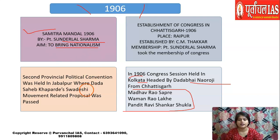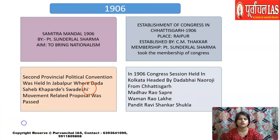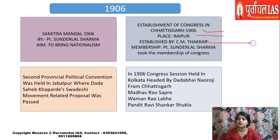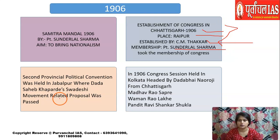Importantly, 1906 was the year Congress was established at the state level in Chhattisgarh — though at the national level it was established in 1885. The Chhattisgarh Congress was established in 1906 at Raipur, now the capital of Chhattisgarh, by C.M. Thakkar, and membership was taken by Pandit Sundarlal Sharma. Remember: when it was established, where, by whom, and who took membership.